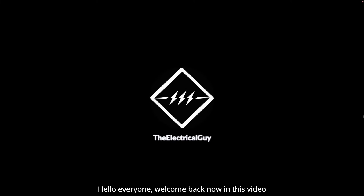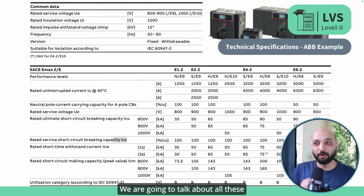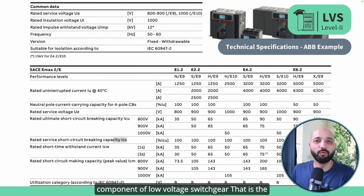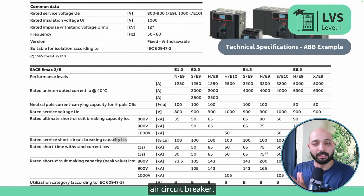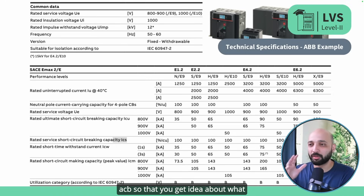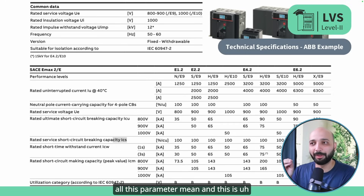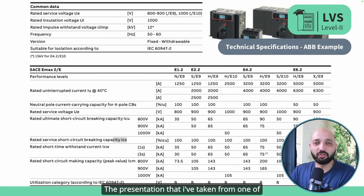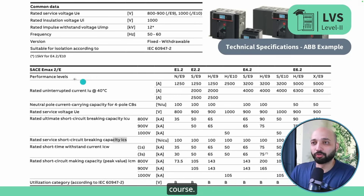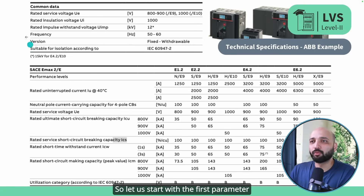Hello everyone, welcome back. In this video we are going to talk about all the technical parameters of one of the most important components of low voltage switchgear — the air circuit breaker. We'll discuss the data sheet and specification of ACB so that you get an idea about what all these parameters mean. This presentation is taken from our course, Low Voltage Switchgear Level 2. Let us start with the first parameter.